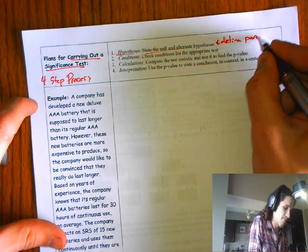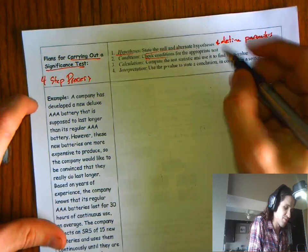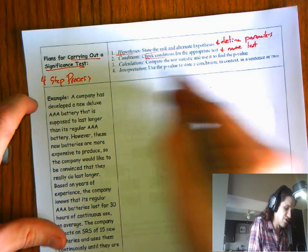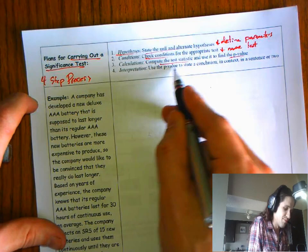Your plan step, you're going to check conditions for the appropriate test, and you're going to name the test. That would be good too. Calculations, that's your do step. You're going to compute the test statistic, find a p-value. And interpretation, state a conclusion in context in a sentence or two.